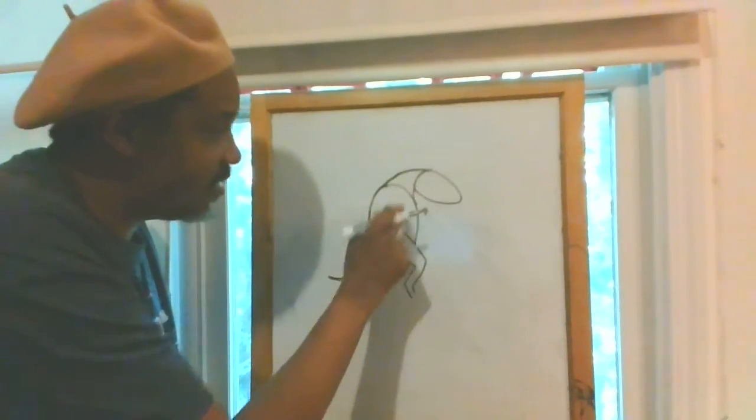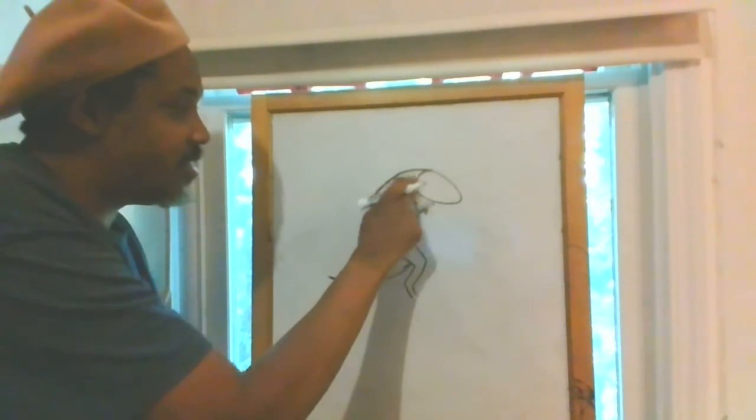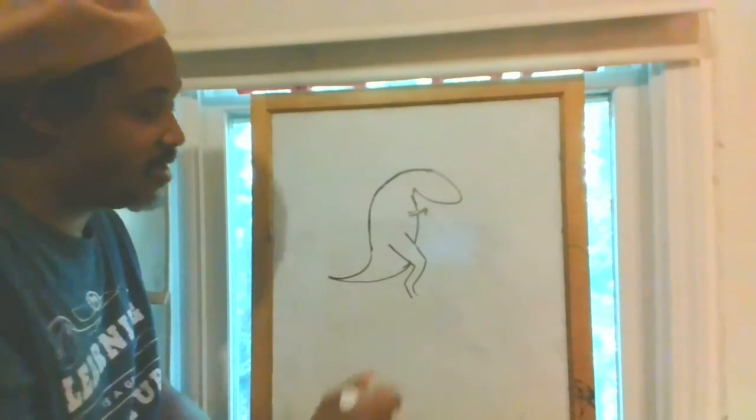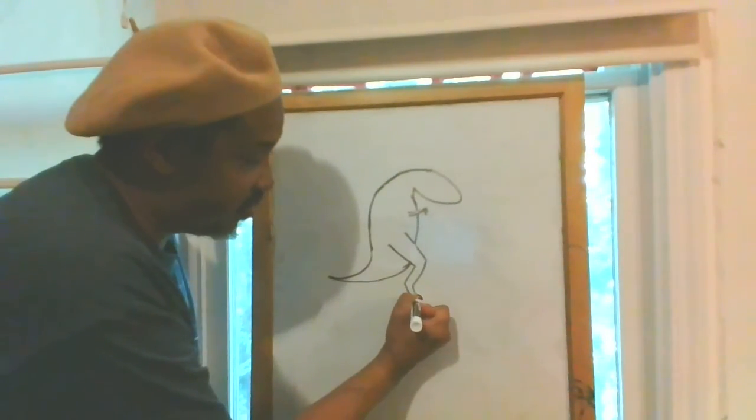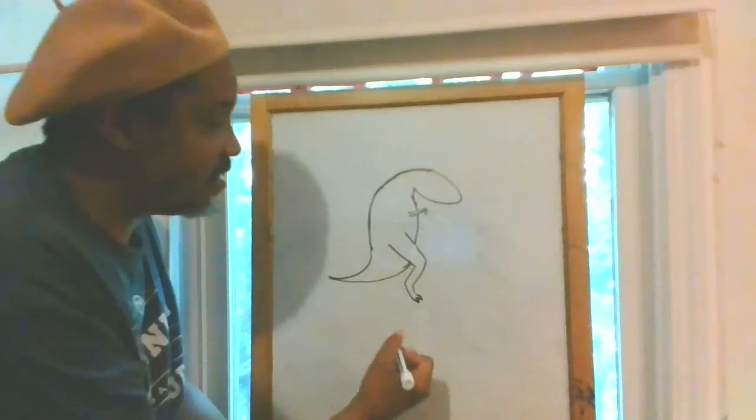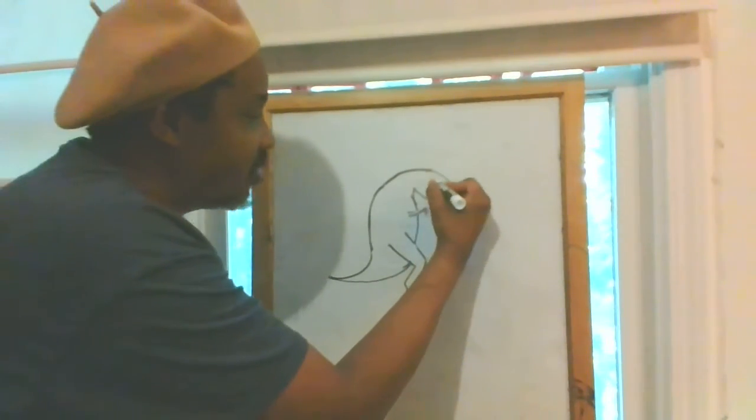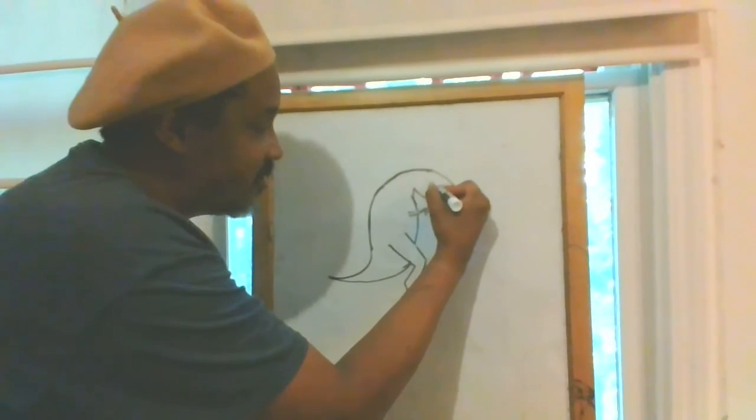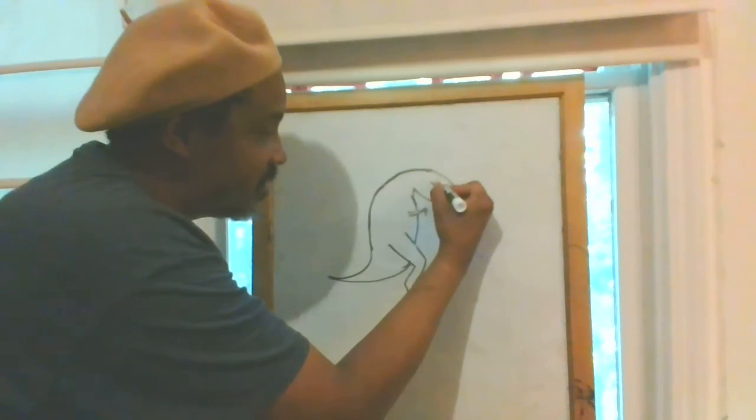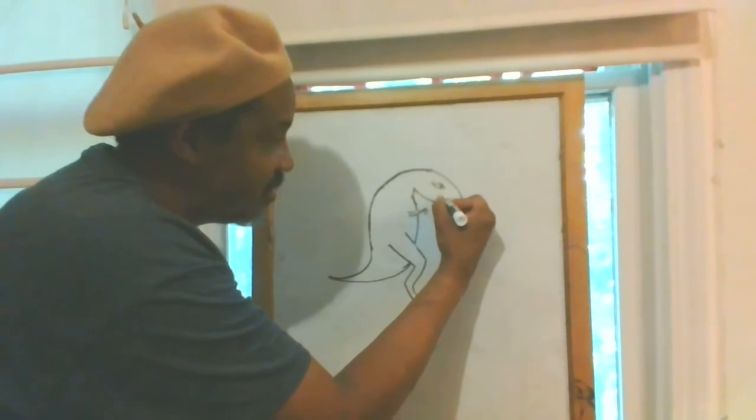Erase that line right there, that line there, and then we're gonna put a couple feet there. Now you can do whatever type of eye you want—some of you guys like to make it really crazy with eyes.